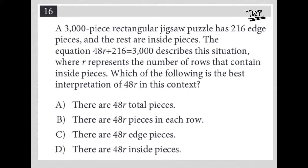Here's an example of how to use this strategy. The first sentence says a 3,000 piece rectangular jigsaw puzzle has 216 edge pieces and the rest are inside pieces. I'm just going to write down 3,000, out of that 3,000, 216 edge. Then it says the rest. I'm going to figure out what is the rest. That would be 3,000, you can go to your calculator just to make sure you're doing your math right, 3,000 minus 216 is 2,784. So 2,784 inside. There's my translation of that first sentence.